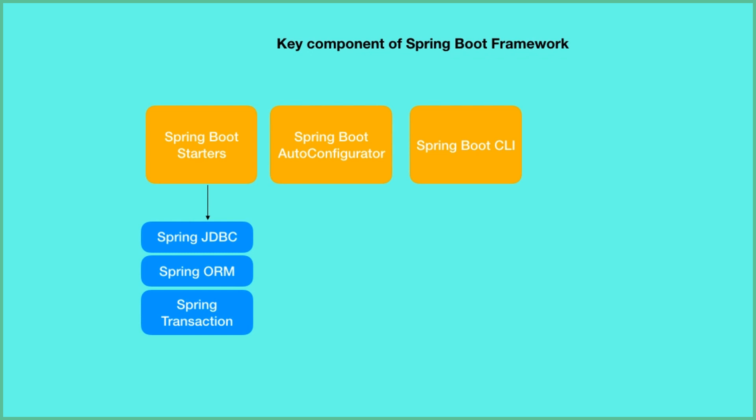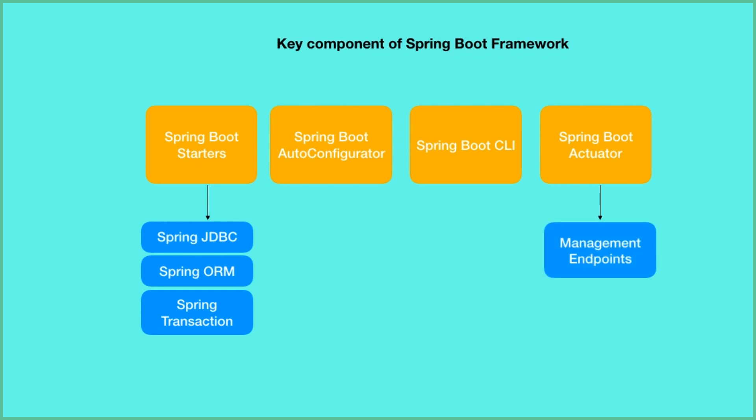Next, we have Spring Boot CLI — a software to run and test Spring Boot applications. Next is Spring Boot Actuator. Spring Boot Actuator gives many features, but two major ones are: providing management endpoints to Spring Boot applications, and when we run our Spring Boot application, Spring Boot Actuator provides the hostname as localhost with default port number 8080. We are going to look into this later.